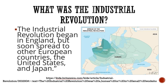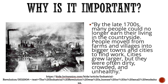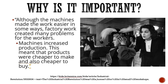The Industrial Revolution began in England but soon spread to other European countries, the United States, and Japan. By the late 1700s, many people could no longer earn their living in the countryside, so people moved from farms and villages into bigger towns and cities to find work. Cities grew larger, but one effect of that is that they were often dirty, crowded, and unhealthy.